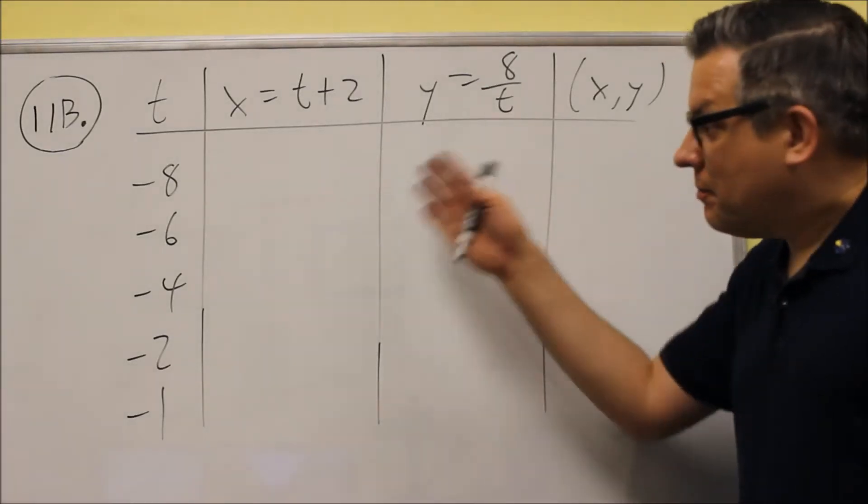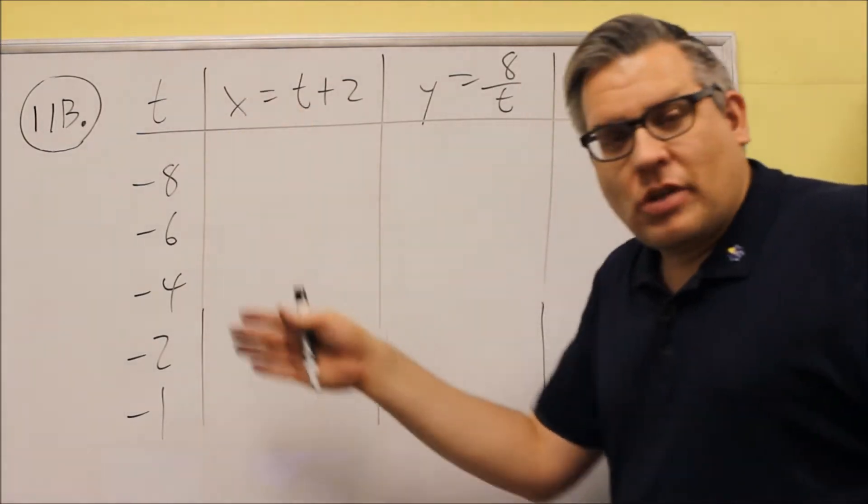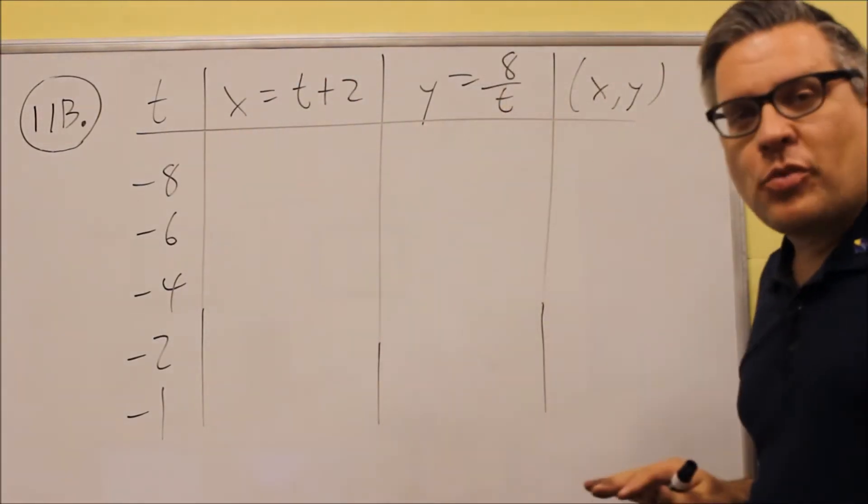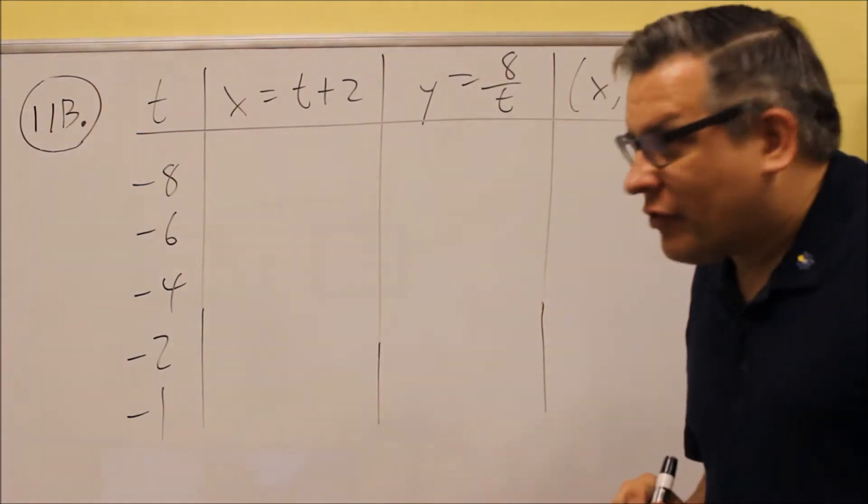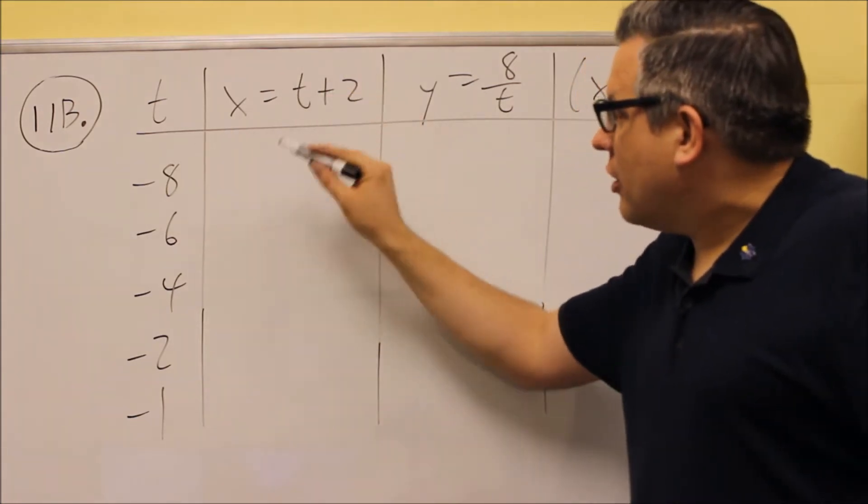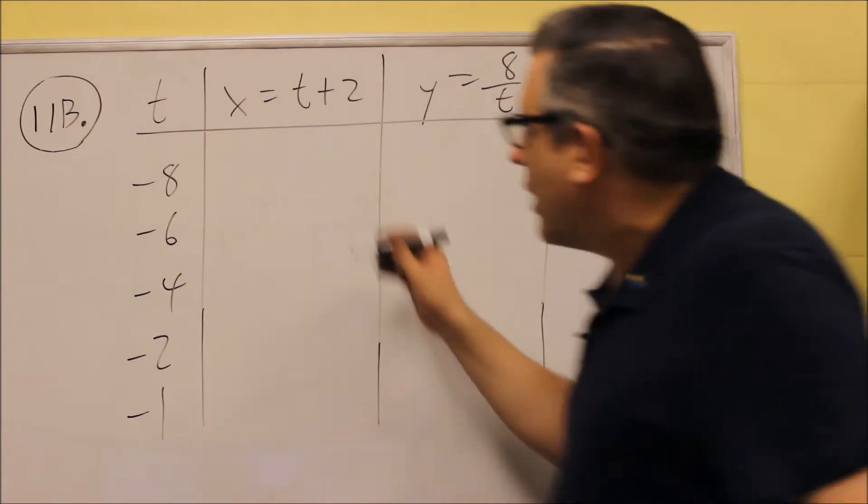So on these problems with parametric equations, you don't have to always have radians or some angles here. It might be a problem like this. You want to make sure you know how to do both kinds here on number 11. The process is still the same. Take the value for t, plug it in here, and we get our corresponding values for x and y that we're going to plot. So let's do that.